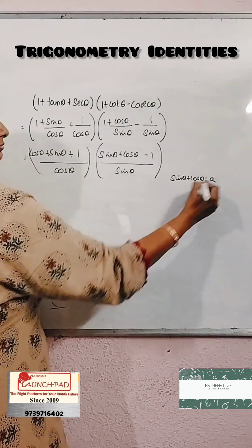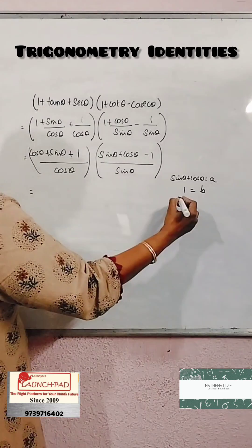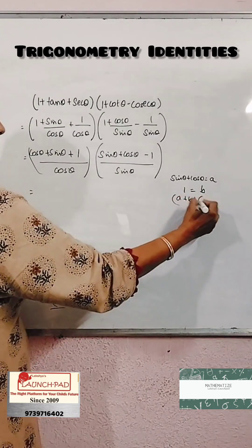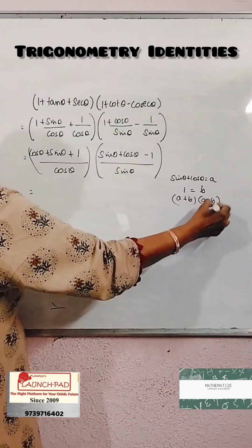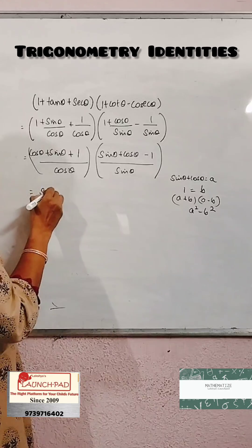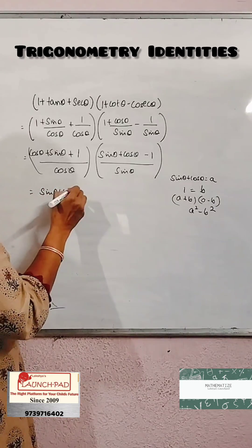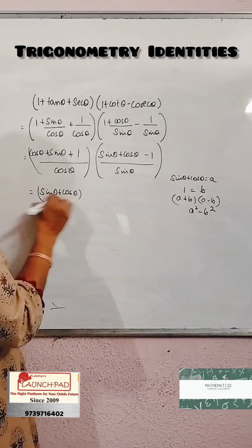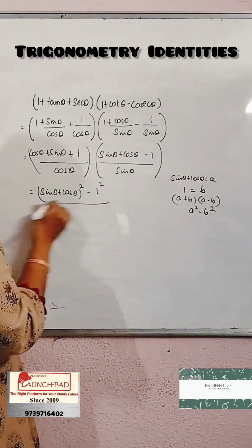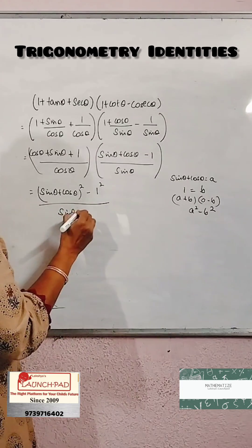We consider (sin θ + cos θ) as 'a' and 1 as 'b', so (a + b)(a - b) becomes a² - b². This gives (sin θ + cos θ)² minus 1², all divided by sin θ into cos θ.